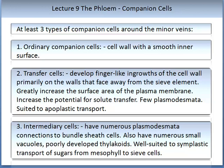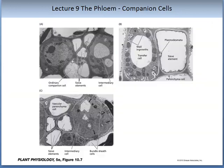The first type is the ordinary companion cell, with a cell wall with a smooth inner surface. The second type are called transfer cells; they develop finger-like ingrowths of the cell wall primarily on the walls that face away from the sieve element, greatly increasing the surface area of the plasma membrane and the potential for solute transfer. They have few plasmodesmata and are suited to apoplasmic transport. The third type is intermediary cells, which have numerous plasmodesmata connections to bundle sheath cells, numerous small vacuoles, and poorly developed thylakoids. These are well suited to symplastic transport of sugars from mesophyll to sieve cells.